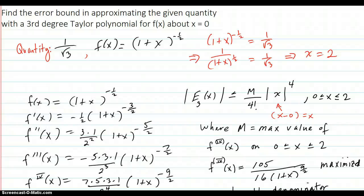Find the error bound in approximating the given quantity with a third-degree Taylor polynomial for f of x about x equals 0. So we're supposed to approximate this quantity.